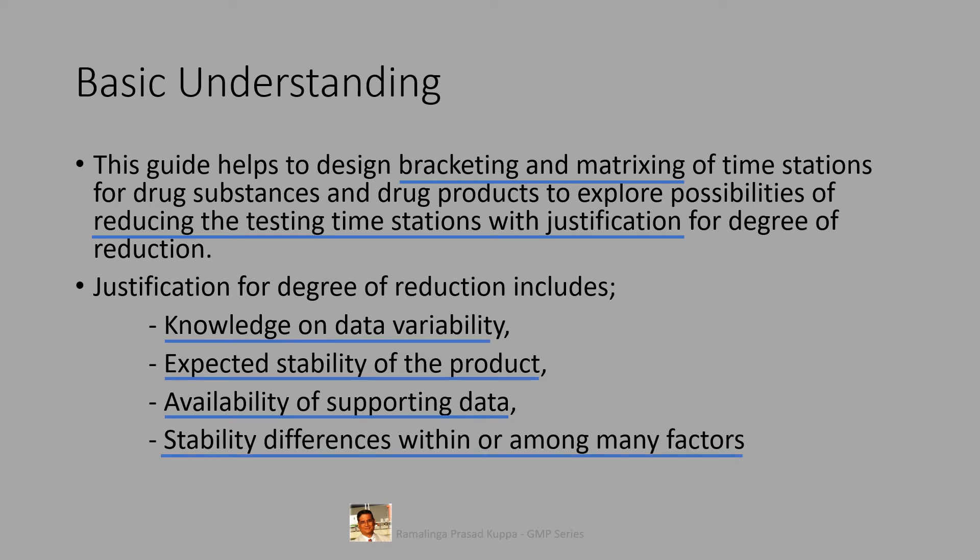Stability differences within or among many factors. Number of factors, combinations in the study. These two things generally work well for dosage forms. They are not much relevant for APIs. The potential stability differences among various factors may have to be considered while bracketing design is proposed. Few examples for number of factor combinations could be capsules of different strengths made with different fill plug sizes from the same powder blend, or tablets of different strengths manufactured by compressing varying amounts of the same granulation, and oral solutions of different strengths with formulations that differ only in minor excipients.